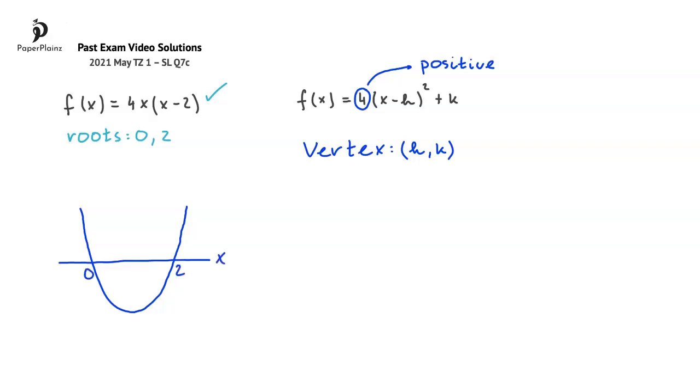The vertex of this parabola is here. Due to the symmetry in the graph, this vertex is halfway between the x-intercepts. The number halfway between 0 and 2 is 1, so the x-coordinate of the vertex is 1. So from this we can conclude that h is equal to 1.